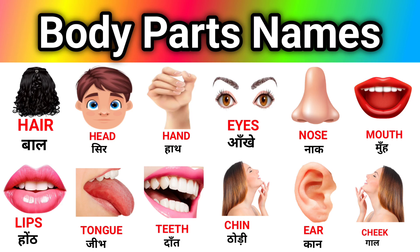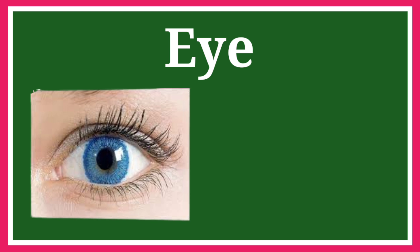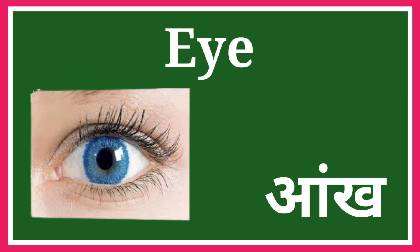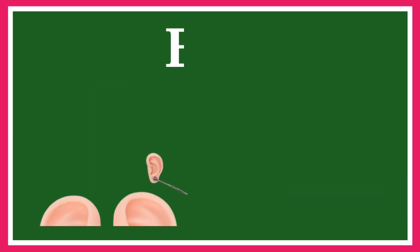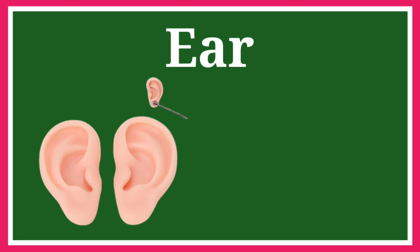Body Part Name. Eye — Eye means Aank. Hair — Hair means Bal. Ear — Ear means Kaan.